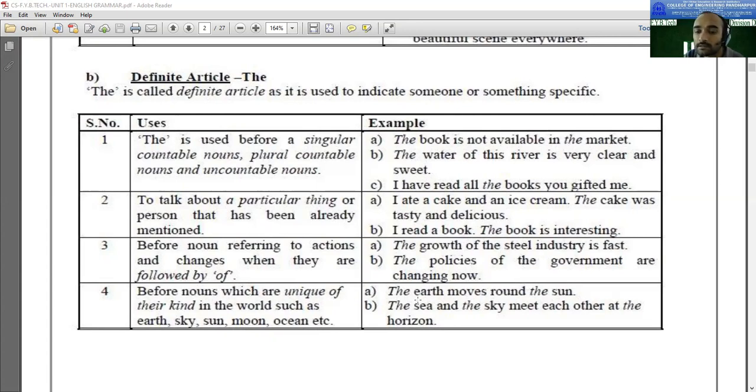The earth moves around the sun. Here, earth and sun, these are the unique of their kind. That's why we have to use 'the' as an article before these two nouns. Then, the sea and the sky meet each other at the horizon.